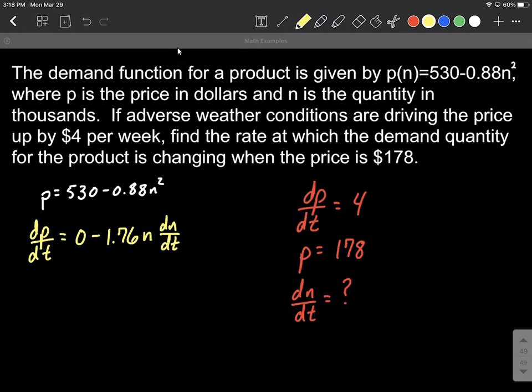Now what we're looking for is that dN/dt, but before we do that, we can plug in some of these values. We don't know what N is just yet at a price point of 178. So off to the side, I'm going to plug in to our original function.